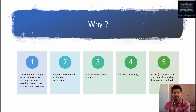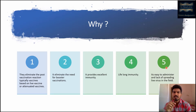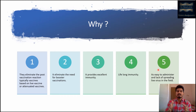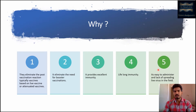Fifth, recombinant vaccines are easy to administer and lack live virus spreading in the field. This is very important: because recombinant vaccines use a mutated form of bacteria or carry DNA from virulent bacteria or viruses, vaccinated animals can be identified by sampling. We can easily differentiate vaccinated from non-vaccinated animals because vaccinated animals will carry mutated or recombinant strains in their body, while non-vaccinated or infected animals will not.